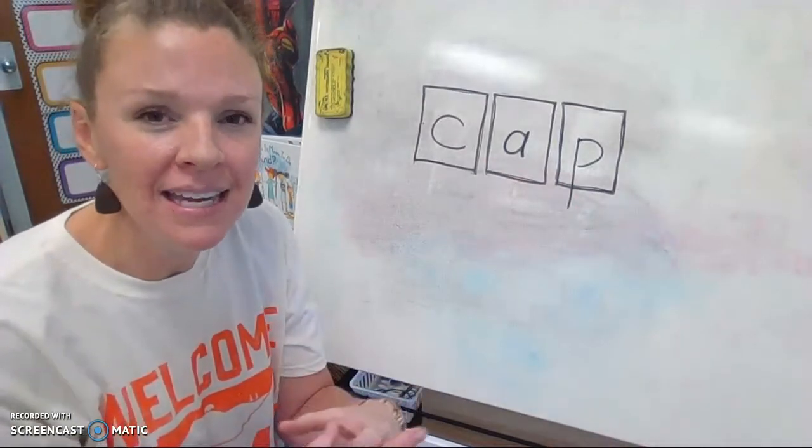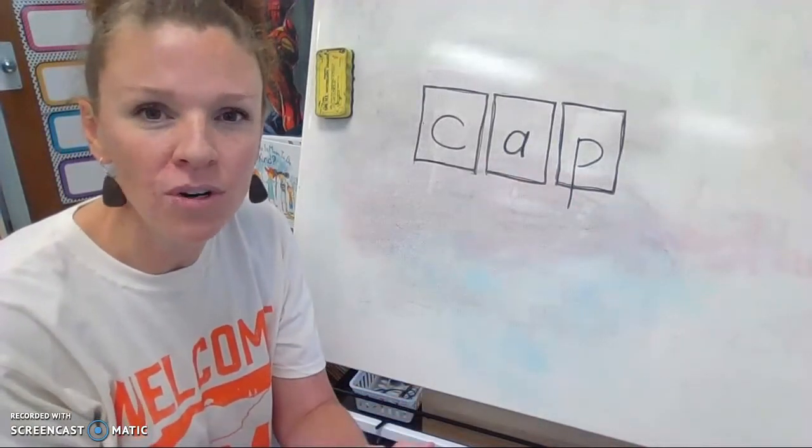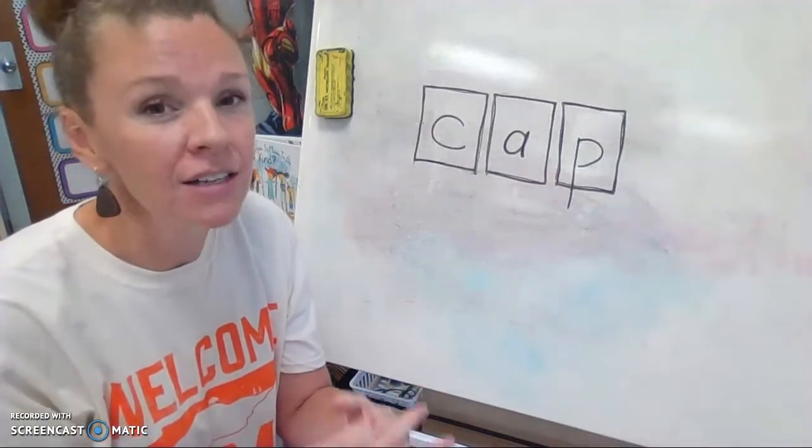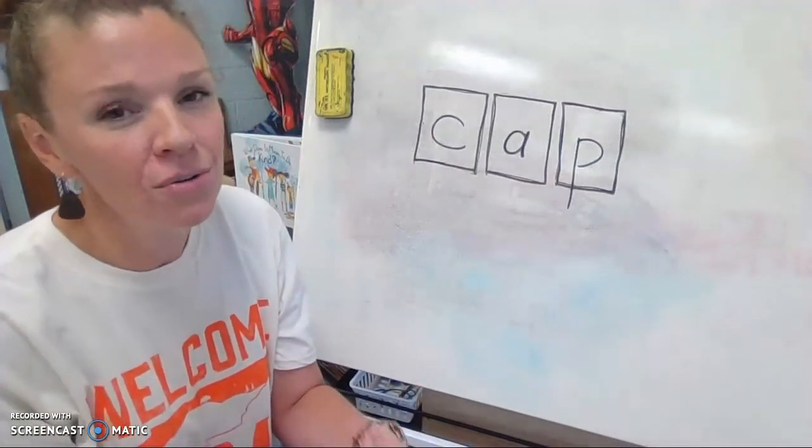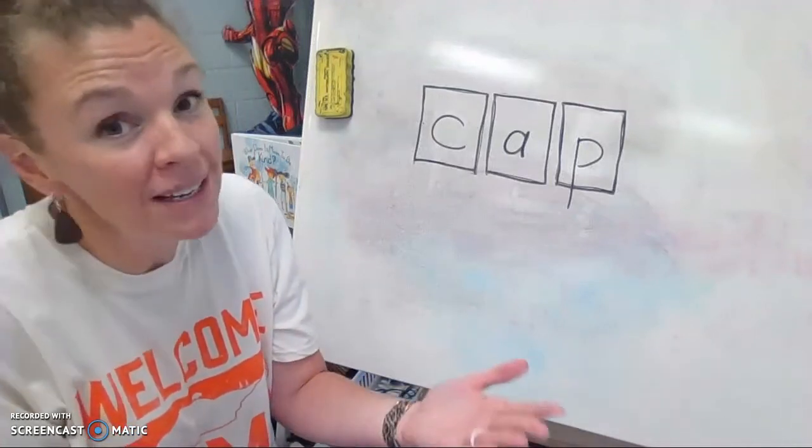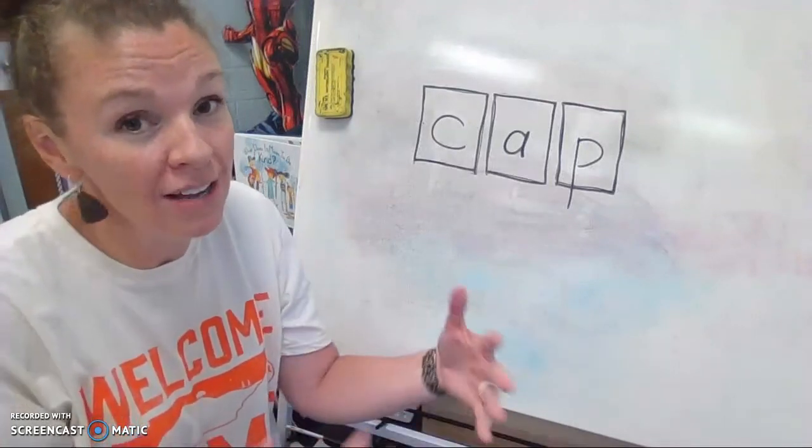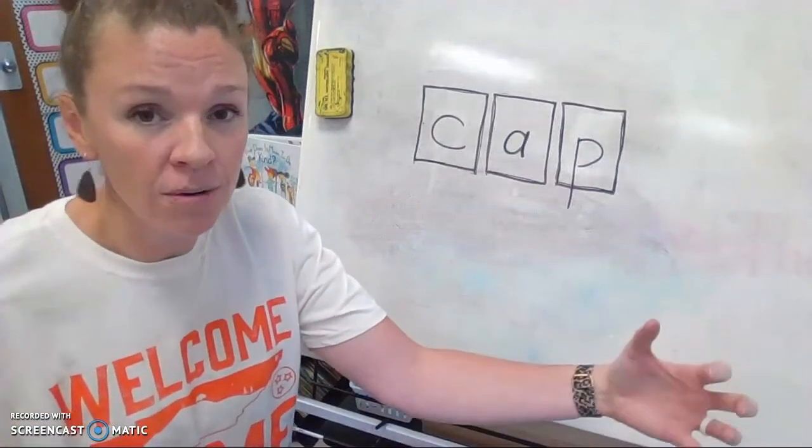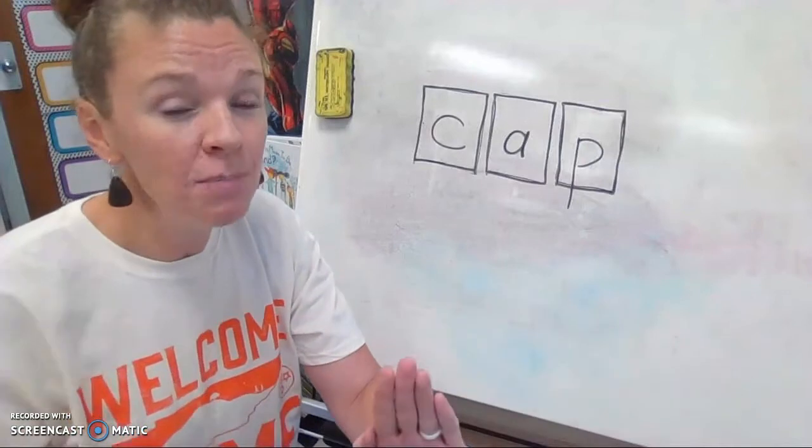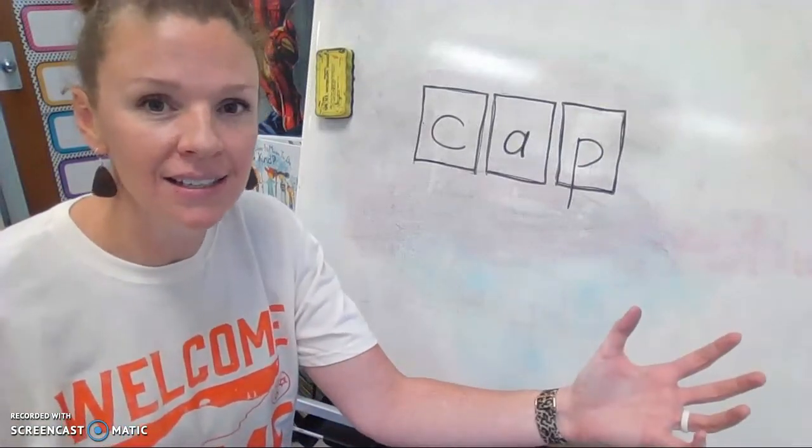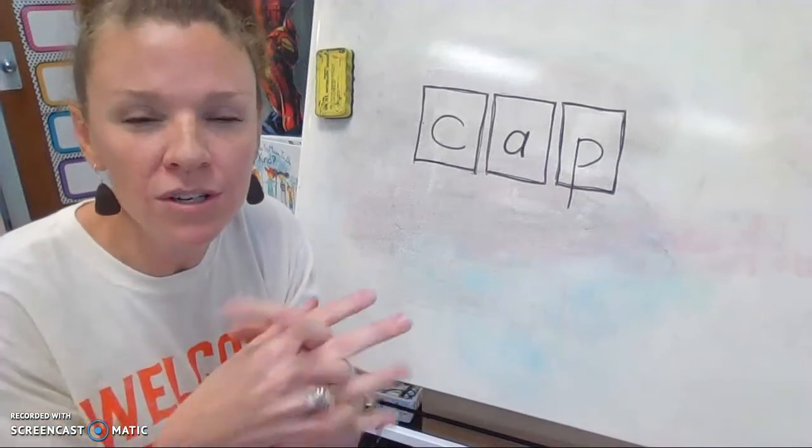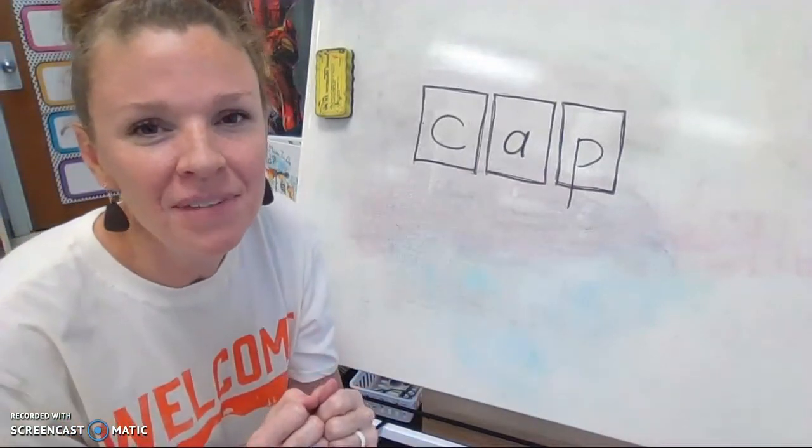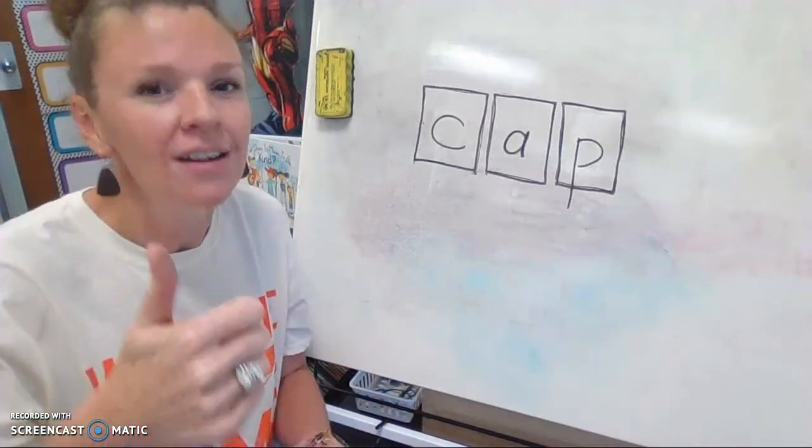So boys and girls, this is how you blend sounds to make words. And you use different letter sounds together in a certain order to create words. And then we've been counting words and sentences. So you take those words that you made out of letters, and then you put the words together with the right spaces and you make a sentence. All of the things we're learning are going to go together beautifully to help you learn to read. I'm so proud of you. Great work. See you later.